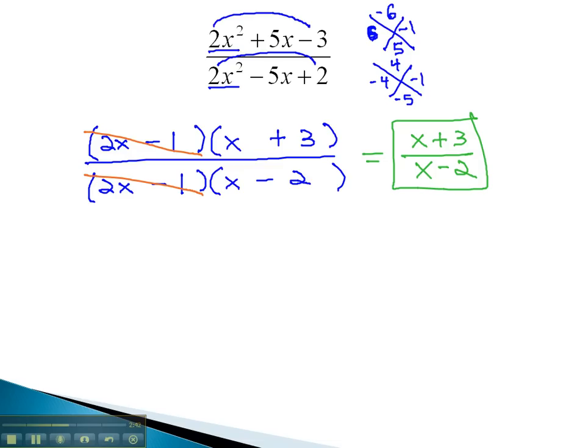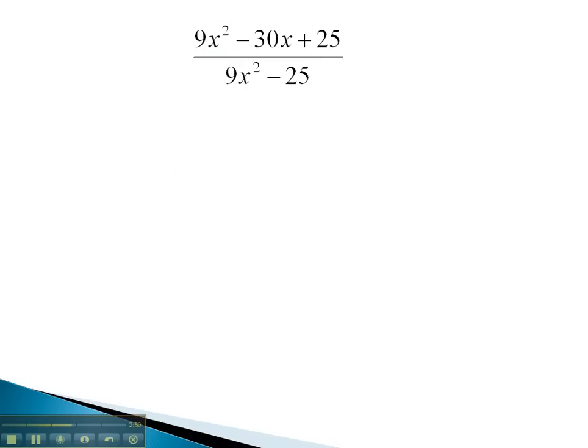Let's take a look at another example, where we have to factor first before we're allowed to reduce. In this problem, we can't jump right to reducing the 9x squareds as a result of the pluses and minuses in the problem. We must first factor the numerator.